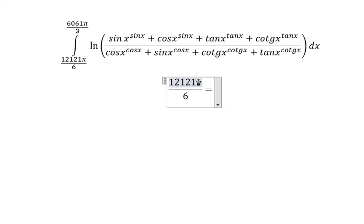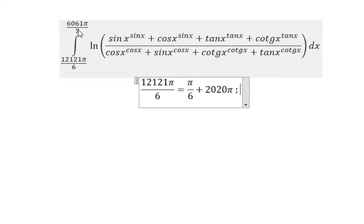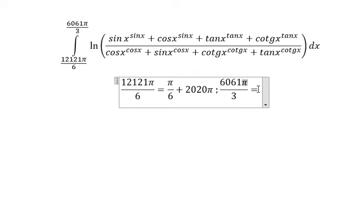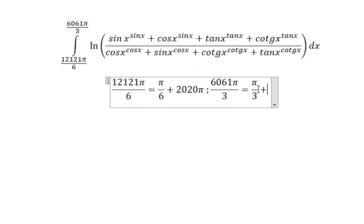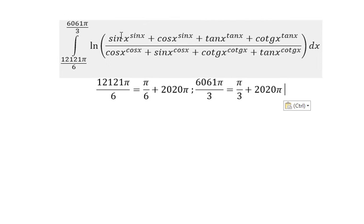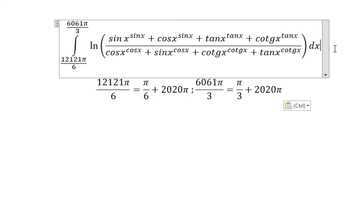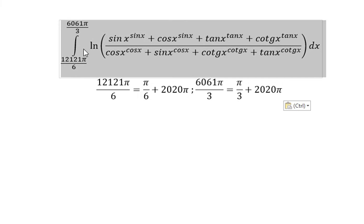This boundary in here we can put about π over 3 plus 2020π. We know that all of them in here are trigonometric, and we know that this is about 1010 cycles of π over 3 and π over 6. So we can change to the new boundaries of this integral.